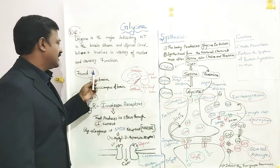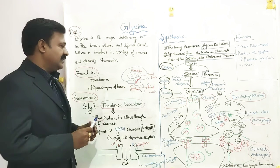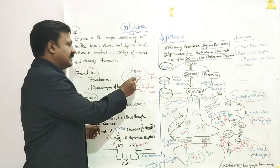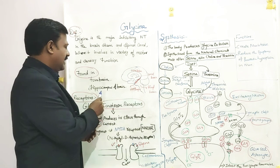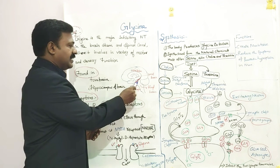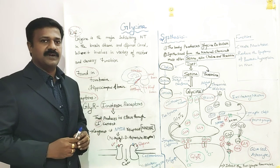And where are they found? Glycine neurotransmitters are found in the forebrain, this part of the brain, and also in the hippocampus of the brain. This area of the brain, the neurotransmitter Glycine is found in.